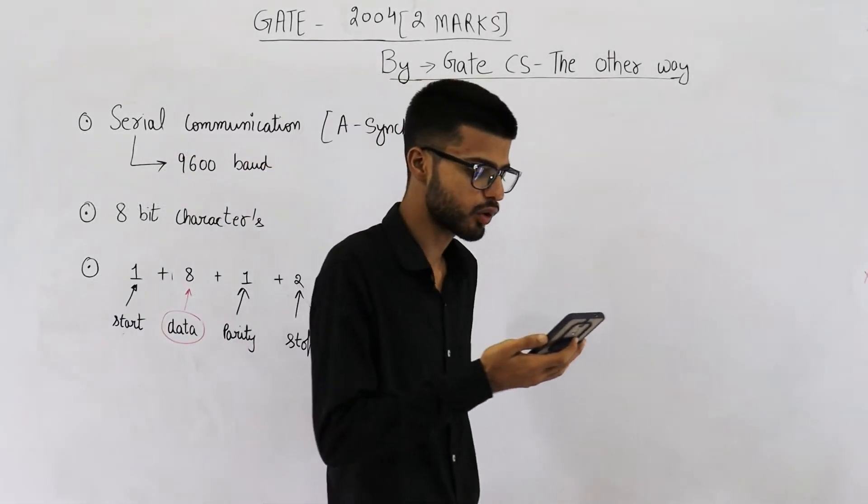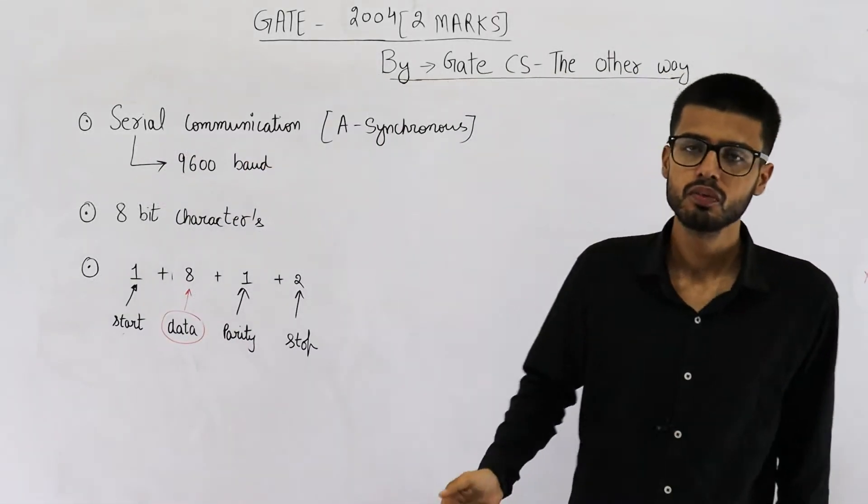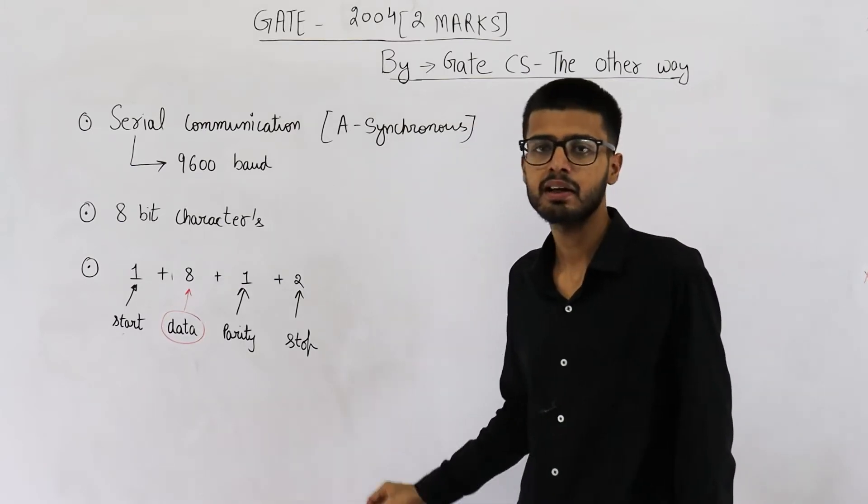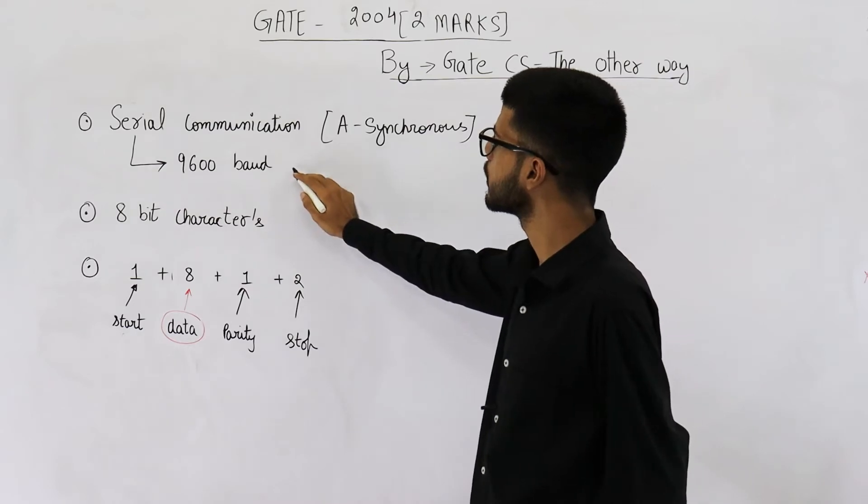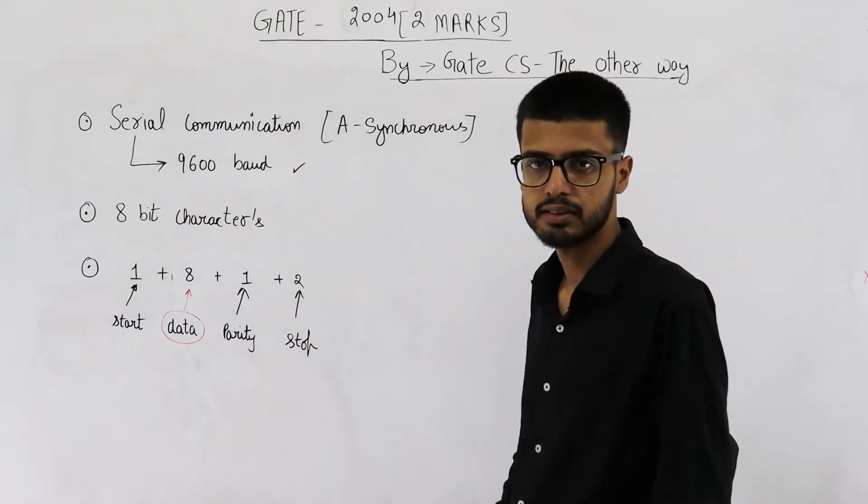You can see they have given you four options. So, we are required to find how many characters can be transmitted every second using serial communication at 9600-baud.